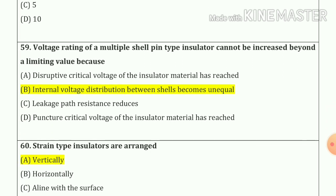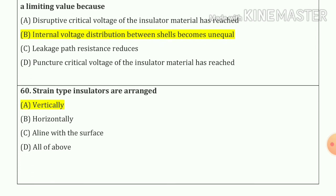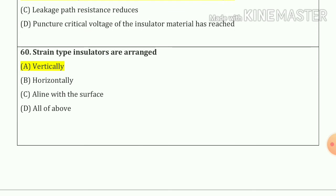Question number 59: voltage rating of multiple cell pin type insulator cannot be increased beyond a limit value because internal voltage distribution between cells becomes unequal — option number B. Question number 60: strain type insulators are arranged vertically — option number A.